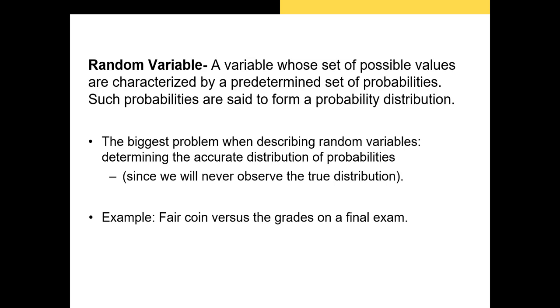For example, does this random variable follow a binomial distribution like the flip of a coin or a normal distribution like the grades on a test? We'll determine the probability distribution of the random variable based on the historical sample data we have, but we won't ever have the entire population of data.